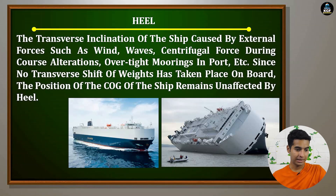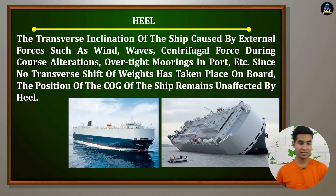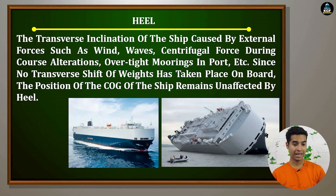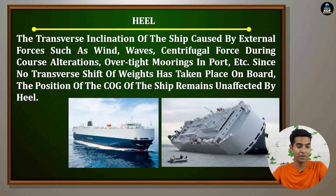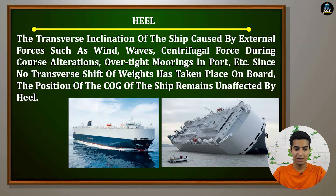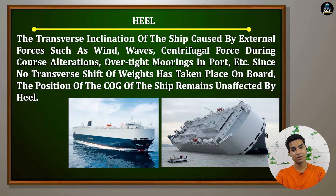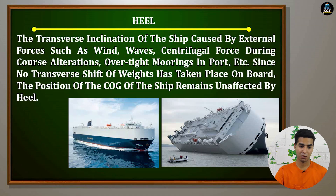Next is heel: the transverse inclination of the ship caused by external forces such as wind, waves, centrifugal force during course alteration, overtight moorings in port, etc. Since no transverse shift of weights has taken place on board, the position of the COG of the ship remains unaffected by heel. So this is the difference between list and heel. List is caused by the internal cause — that is the shifting of cargo or unequal distribution of cargo — and heel is caused by external forces such as wind, waves, centrifugal forces, course alteration, overtight mooring in port, etc.